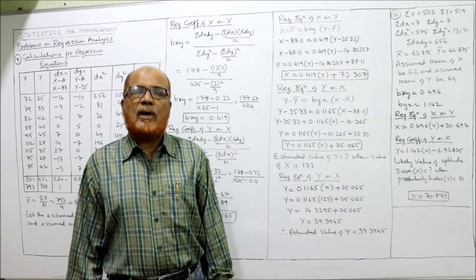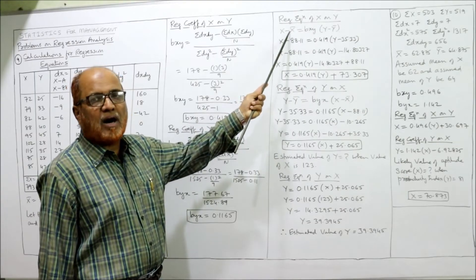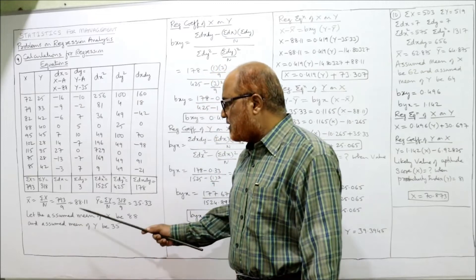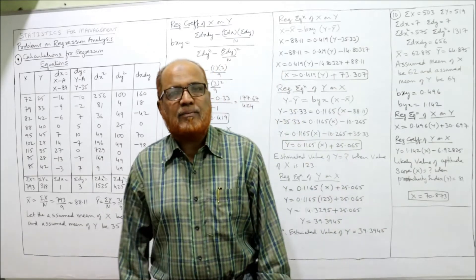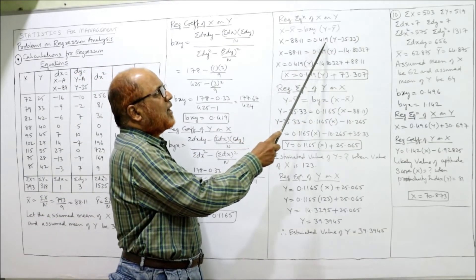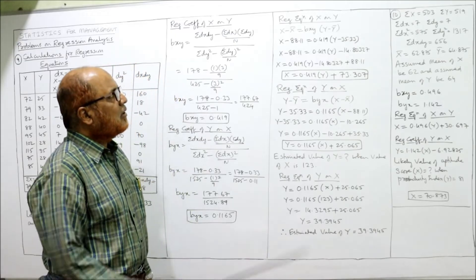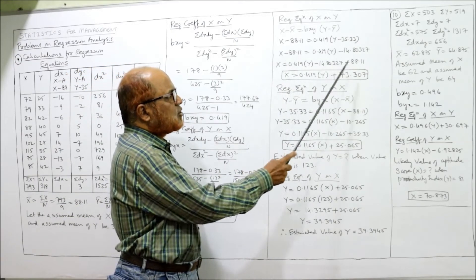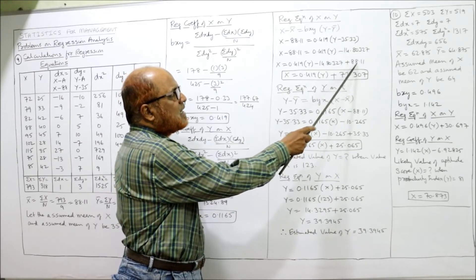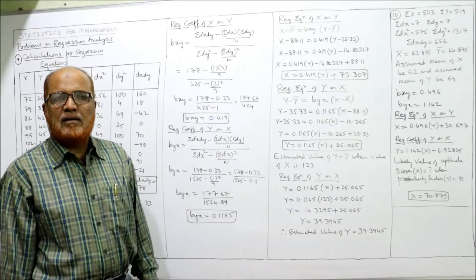We got the two regression coefficients; now find the regression equations. Regression equation x on y: x − x̄ = bxy(y − ȳ). The actual means are x̄ = 88.11 and ȳ = 35.33, and bxy = 0.419. Opening the bracket: 0.419y − 0.419 × 35.33 = 0.419y − 14.803. Bringing constants to one side, the regression equation becomes x = 0.419y + 73.307.